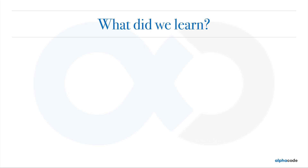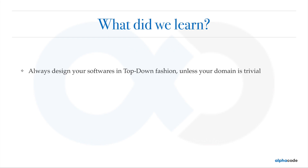Some key points to take away from domain driven design: first, you should always design your software in a top-down fashion unless your domain is very trivial. Top-down means you first look at strategic domain driven design and then go to tactical domain driven design. Always first think about your bounded contexts, your domain, your subdomains, and your core subdomains — separate them out, and then think about each subdomain separately.